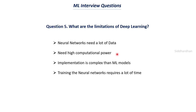The second limitation is that neural networks need high computational power. Neural networks are very complex functions and to implement them we need GPUs, TPUs, and similar machines — systems with high specifications, which can be expensive. The third limitation is that implementation is more complex than simpler machine learning models like logistic regression or support vector machines, which are easy to implement. Deep learning requires a lot of knowledge and is more complex.